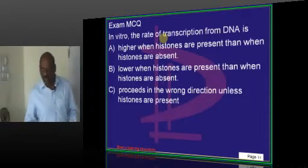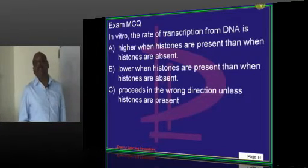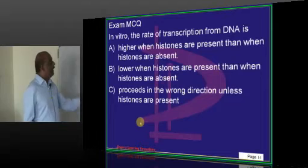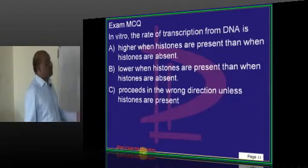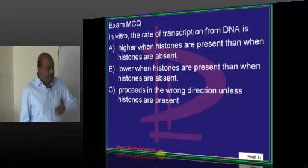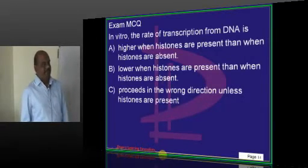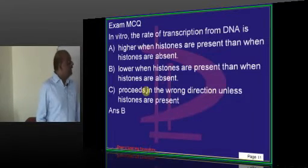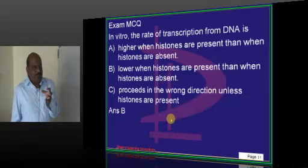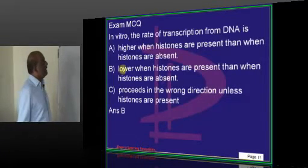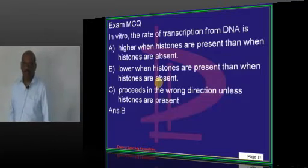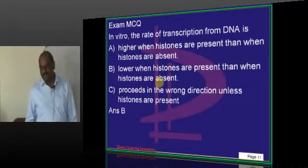In vitro and in vivo, the rate of transcription from DNA is lower when histones are present than when histones are absent, because the DNA becomes condensed. A condensed DNA is not the one ready for replication. Histones keep the DNA packed — like packed clothes that stay inside the box and are not worn.